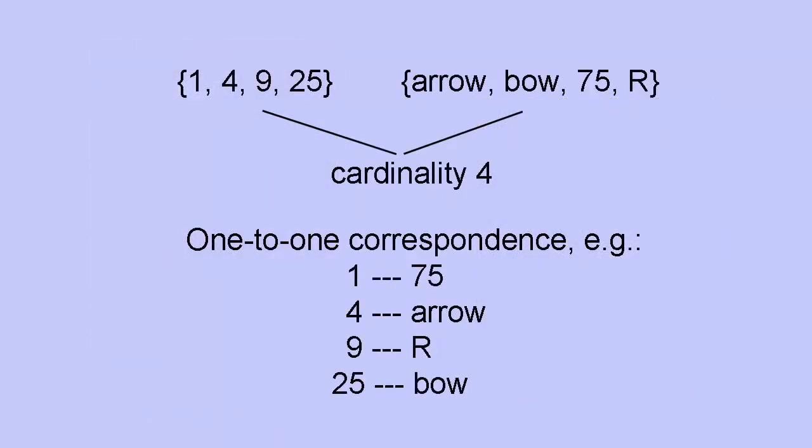A set is just a collection of things, which might be numbers or anything else, and the symbol used to show a set is a pair of curly brackets. For instance, {1, 4, 9, 25} and {arrow, bow, 75, R}. They're both sets.